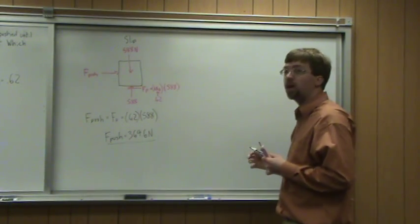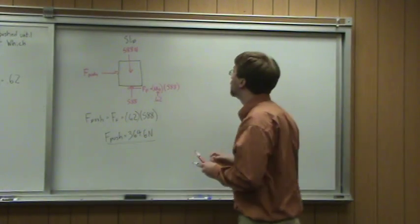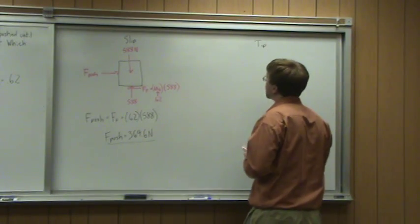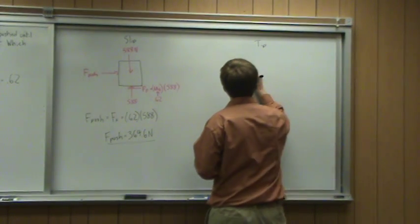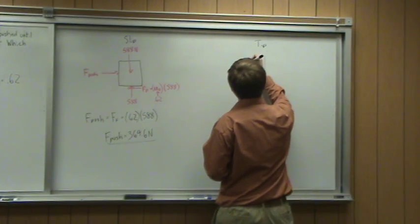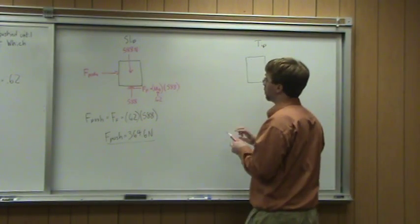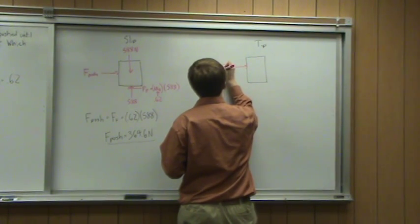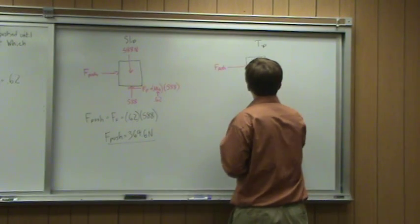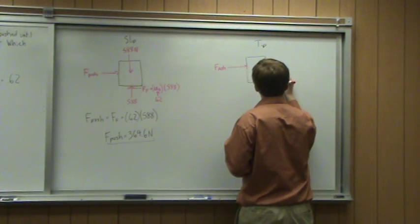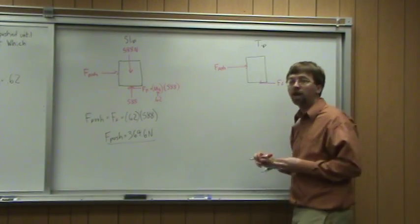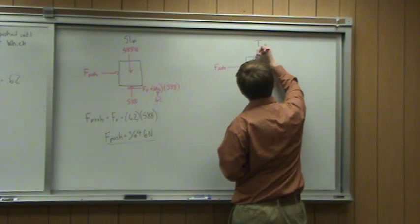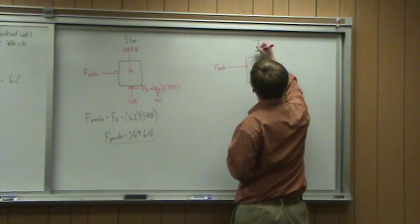So 364.6 newtons is the force required to start sliding this box. Next, let's look at the tipping option. For this case, the moments are important. I've got my box with the pushing force, the friction force equal and opposite to the pushing force, and the weight force pushing down — again 588 newtons.